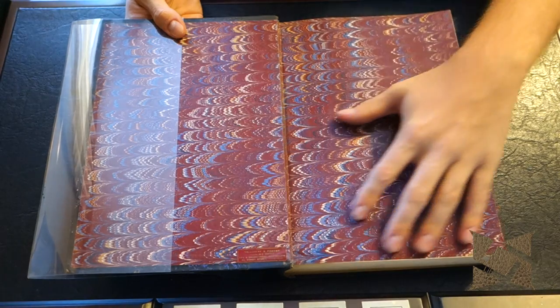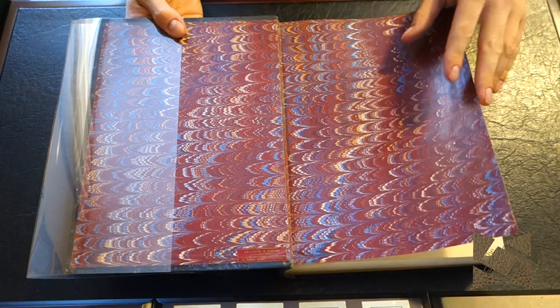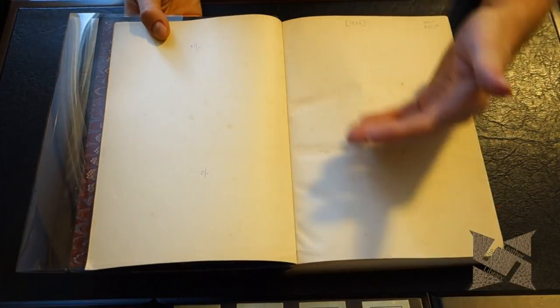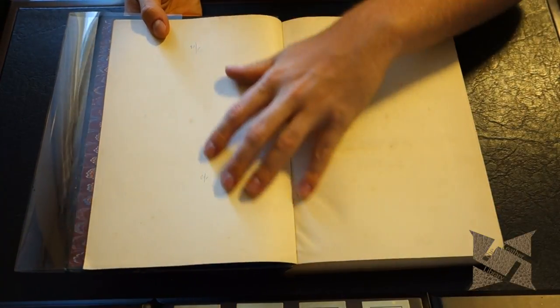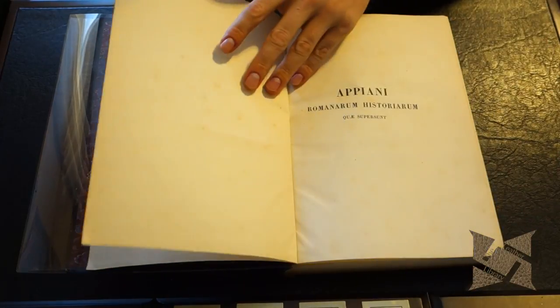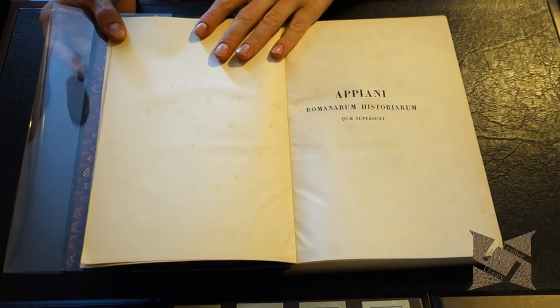So as you can see we have the red marble handmade endpapers here, and then we have the inner papers which have some blotching on them which is not uncommon given its age, and then we have the first paper here with the title on it.